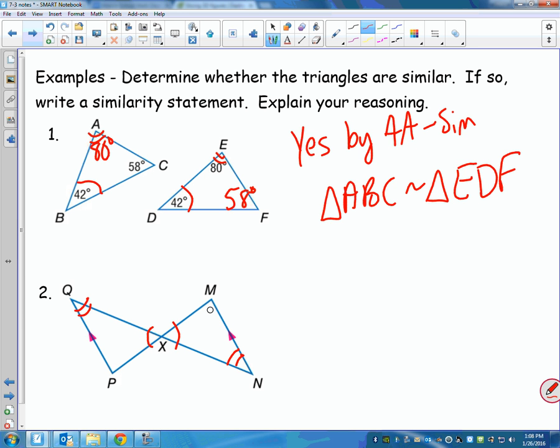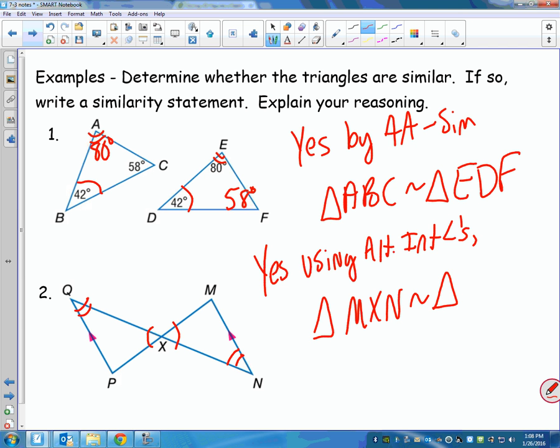And I don't really have to prove the other ones. I only need two. But would these also be alternate interior angles? Yeah. So we can say yes, using alternate interior angles and vertical angles. Triangle MXN is similar to. So again, mark this if you need to. M doesn't have a mark on it. X is in the middle. And then N is the one that's marked too. So in the same order, you have to start with no mark, one mark, two marks. So QXP. Or as long as the letters match up.